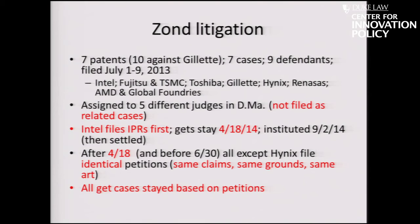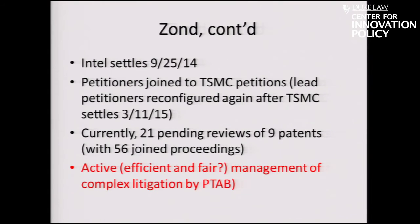They didn't all file joinder motions, though. As a consequence, on August 5th the PTAB ordered all petitioners to file joinder motions within 10 business days. As a result, there was joinder for all petitions and all patents. Currently we have 21 pending reviews of nine patents with 56 joined proceedings. Intel ended up settling out, so the remaining petitioners were joined to the TMC petitions. Query: this is clearly active management by the PTAB — they had a conference call and said you've filed identical petitions, you better get your joinder motions in. Is this efficient and fair?